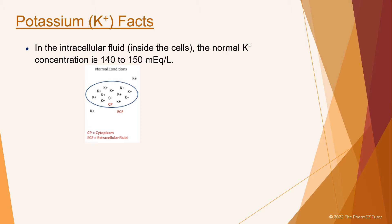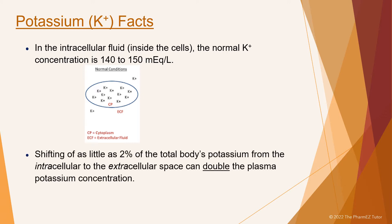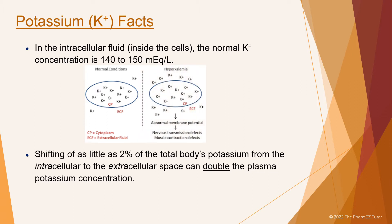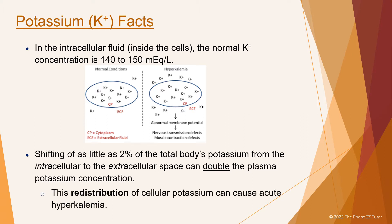The sodium-potassium pump actively transports sodium and potassium across the cell membrane. Shifting of as little as 2% of the total body's potassium from the intracellular to the extracellular space can double the plasma potassium concentration. Notice in the diagram just how a small amount of potassium migrating outside of the cell and into the blood can be significant. This redistribution of cellular potassium can cause acute hyperkalemia.